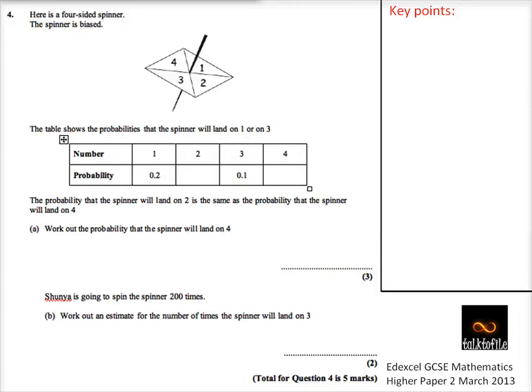Question number four is a probability question. Some of the key points: we know probabilities add to one. That's a key point.